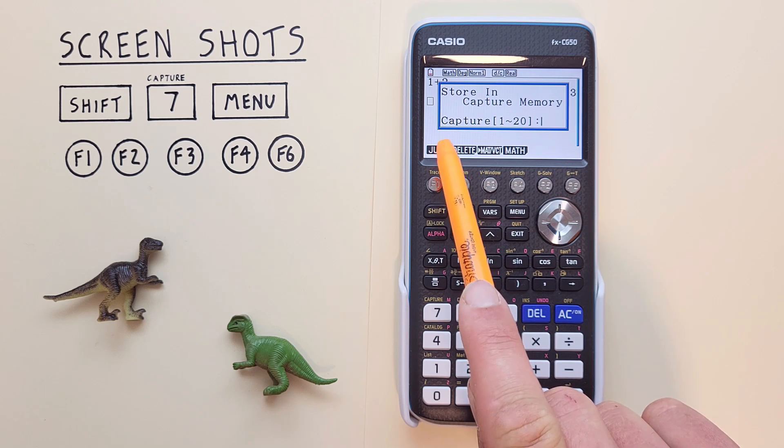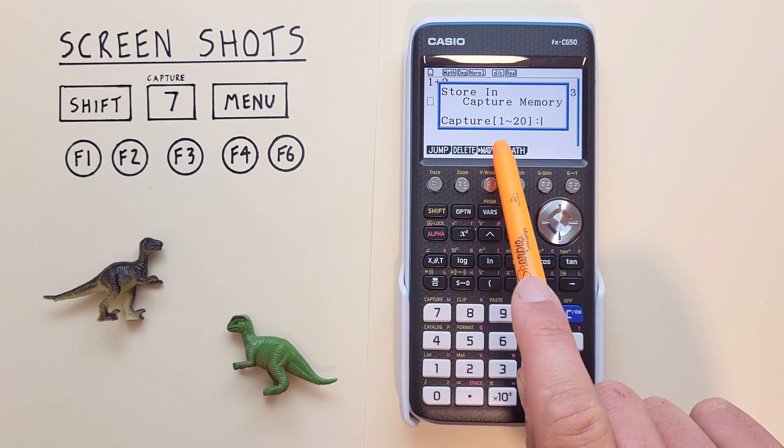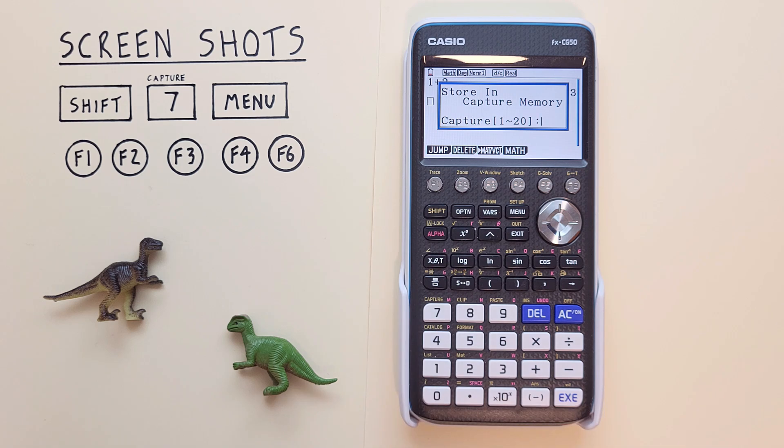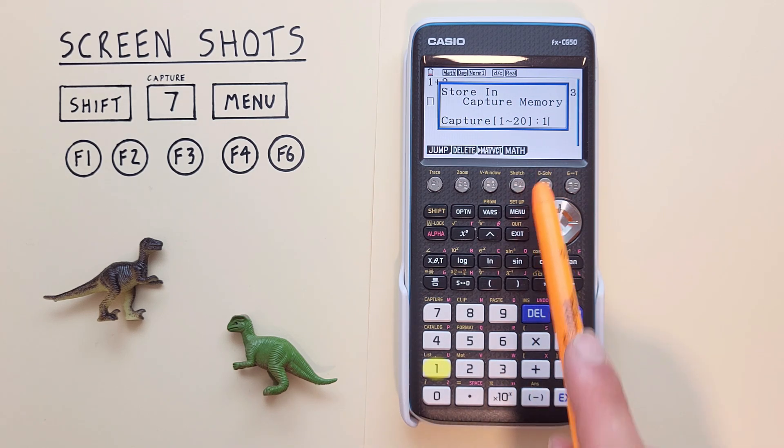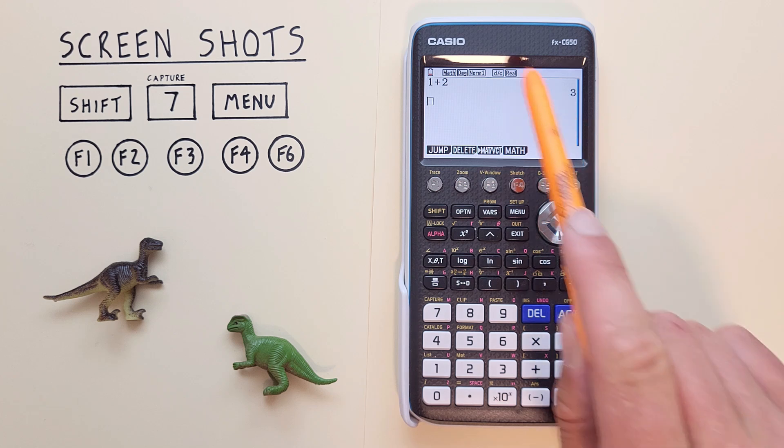This is asking where do we want to store this screenshot in memory slot 1 through 20. So we can store 20 screenshots on this calculator. Let's put this in number one. So we put one on the screen and hit exe. Our screenshot has now been saved.